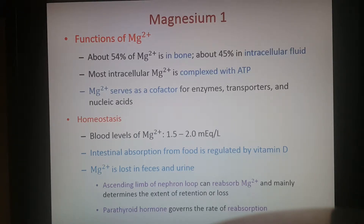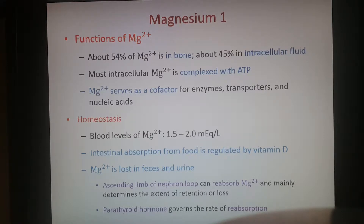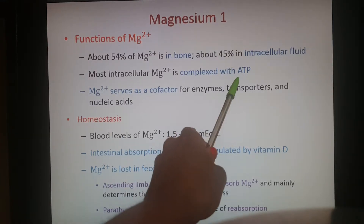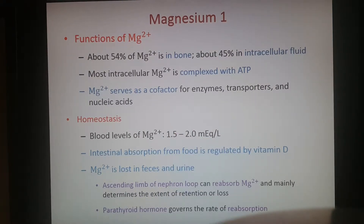Chapter 24 Part 2, moving on to magnesium. Functions of magnesium: it is part of the minerals that make bone, as well as being in fairly high concentrations in the intracellular fluid — inside the cells. There it's usually complexed with ATP molecules, and it's also a cofactor for different enzymes, transporters, and nucleic acids.